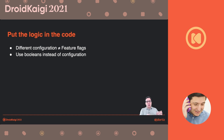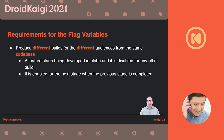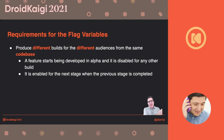You can use these boolean flags to drive different configurations and configuration options. Where do you set those boolean flags? You can produce a different build for the different audiences from the same source code. That feature will start being enabled only for your development, and then it will be progressively adopted by the next versions — the other stages of your development.